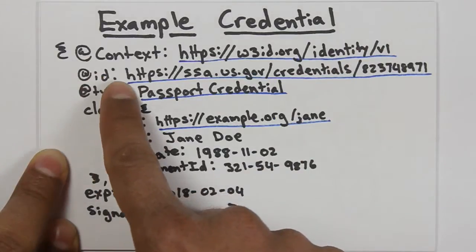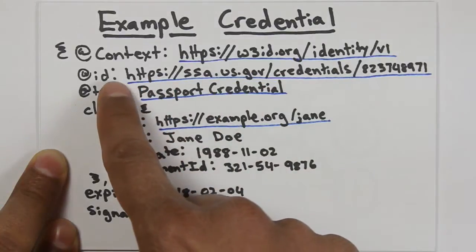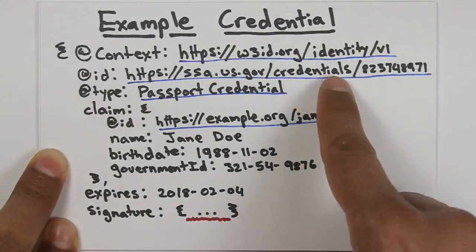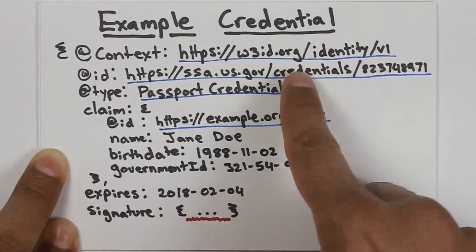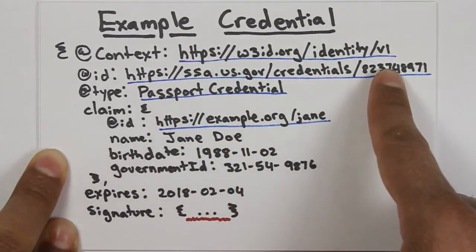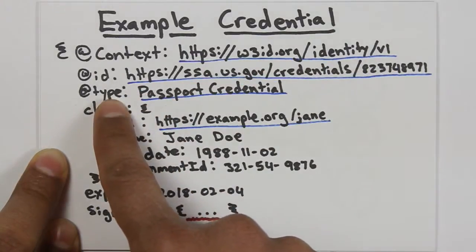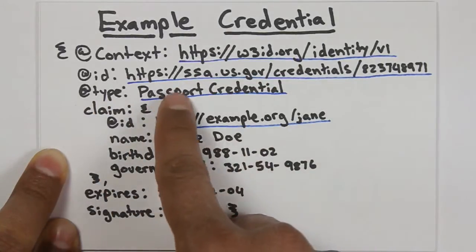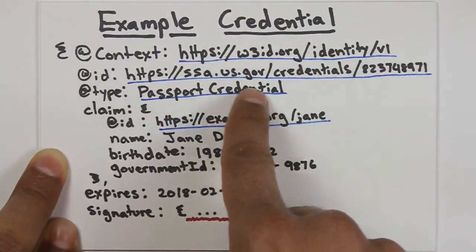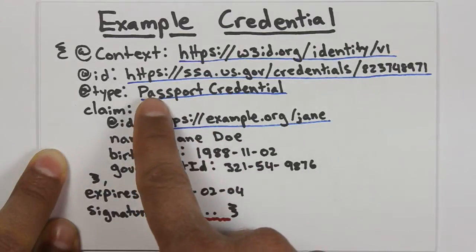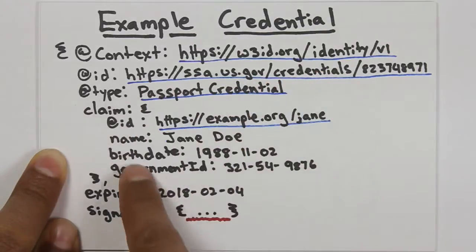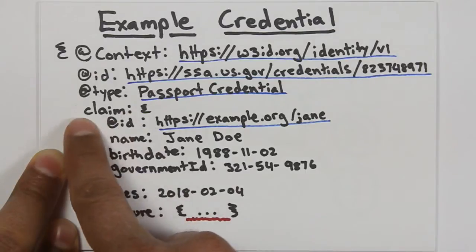The next thing we have is the ID of the credential itself. The ID allows us to look up that credential at any time in the future - for example, if we want to see if the credential is still valid, or if we want to read other metadata about it, we can go to this URL and read that information. The third piece of information is the type of credential. There are many different types - passport credentials, driver's license credentials, email credentials, shipping address credentials, billing address, payment provider credentials. But the one thing that's common across all of these credentials is that they each have a set of claims.